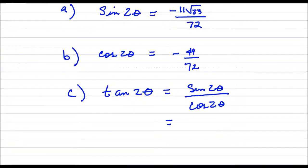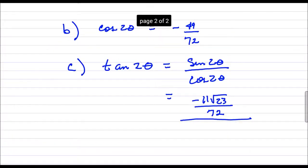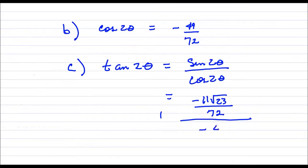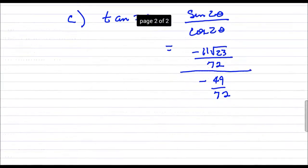So all I need to do is just replace sine 2 theta and cosine 2 theta and simplify. So the sine of 2 theta, that was negative 11 times the square root of 23 divided by 72. And we are dividing that by the cosine of 2 theta. That was negative 49 over 72.